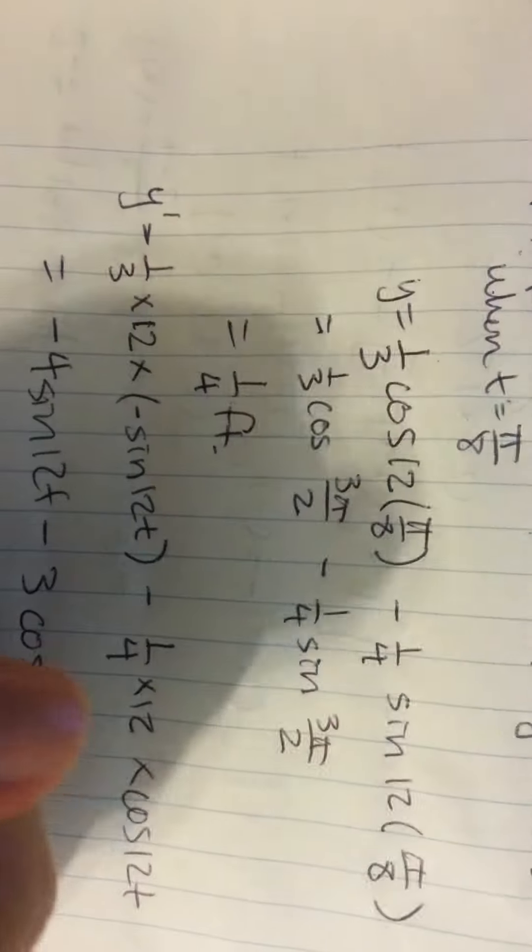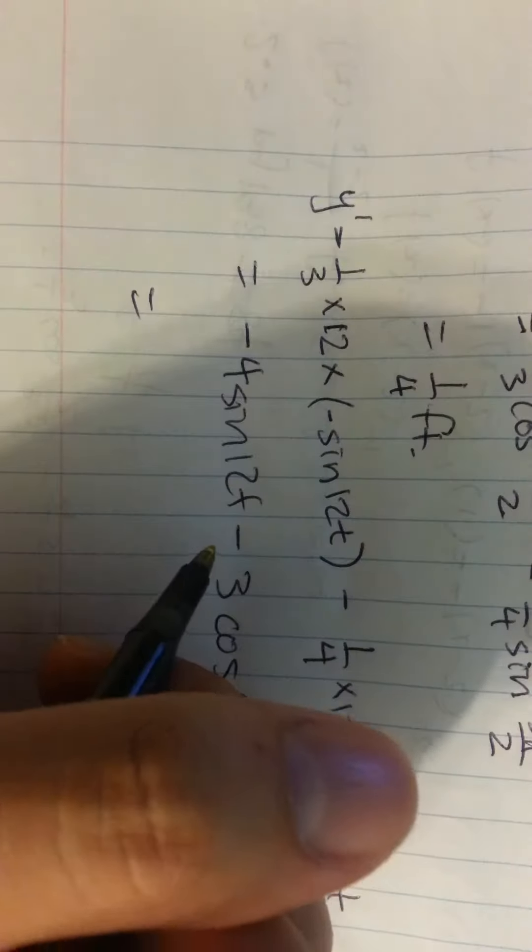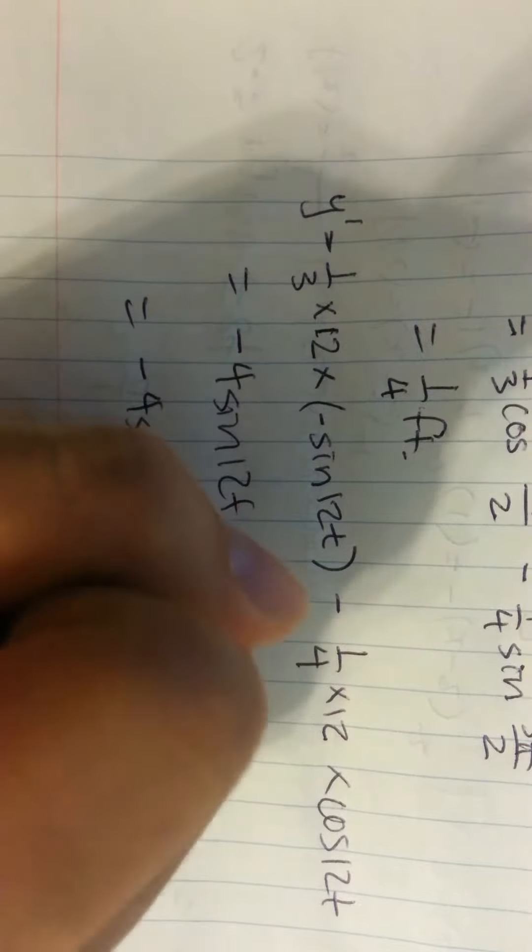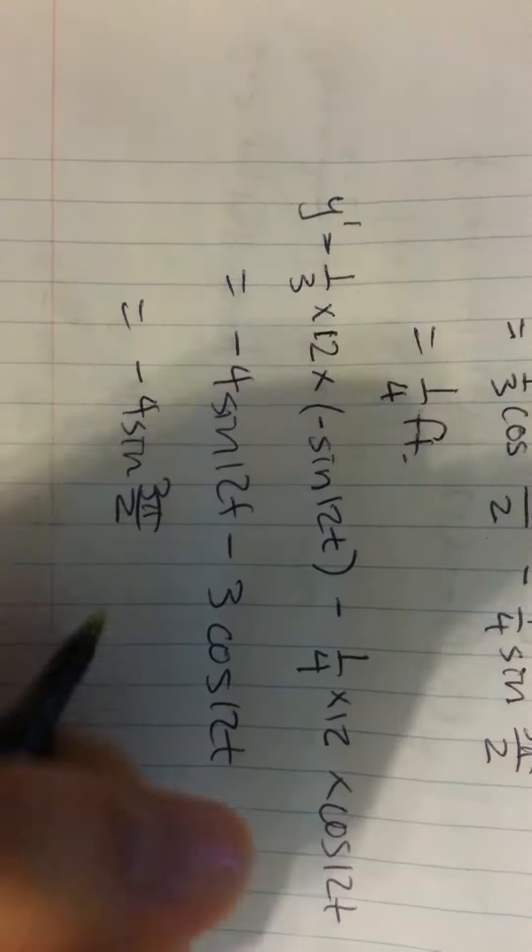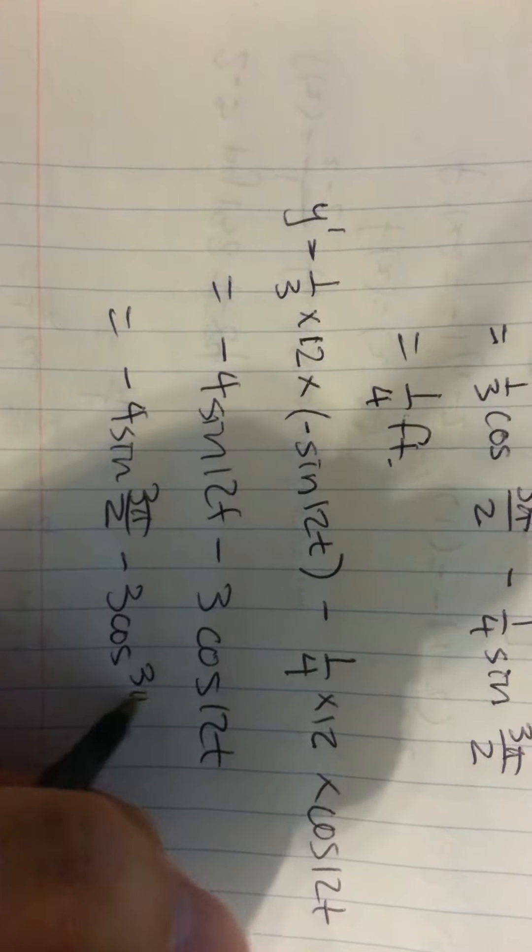plug in t, which is π/8, you get negative 4 sine of 3π/2 minus 3 cosine of 3π/2.